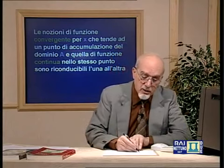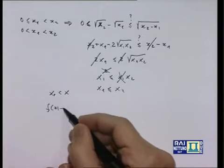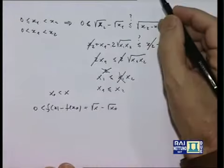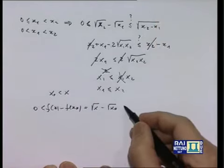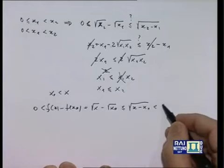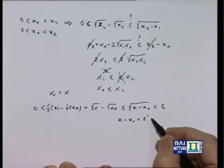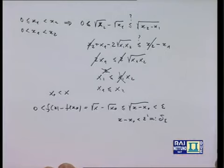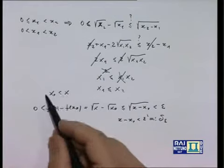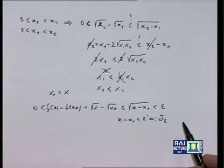Armati di questa disuguaglianza, è facile verificare la continuità della funzione radice quadrata. Prendiamo un punto x₀ e scegliamo x a destra di x₀: f(x) - f(x₀) = √x - √x₀, che per la disuguaglianza dimostrata è minore di √(x - x₀). Voglio che questo non superi epsilon; elevo al quadrato: x - x₀ < ε². Battezzo delta(epsilon) = ε². Quando x differisce da x₀ di meno di delta(epsilon), le cose vanno come desidero. Il caso di x a sinistra di x₀ si tratta allo stesso modo, scambiando i ruoli di x e x₀.